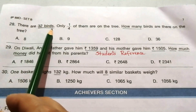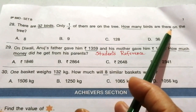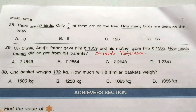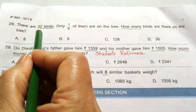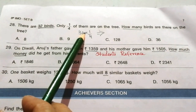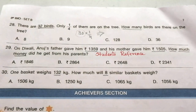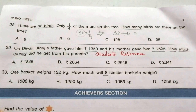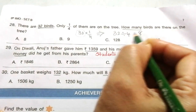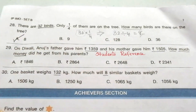Question 28: There are 32 birds and only 1/4 of them are on a tree. How many birds are on the tree? We multiply 32 by 1/4, which means dividing 32 by 4. Using the 4-times table: 4 eights are 32. Our answer is 8.